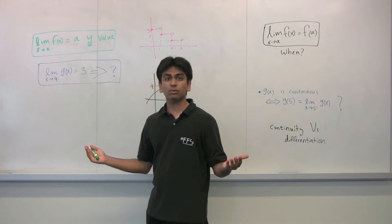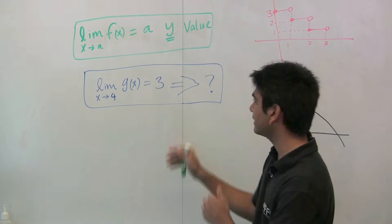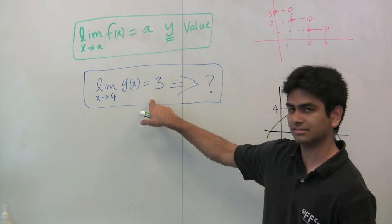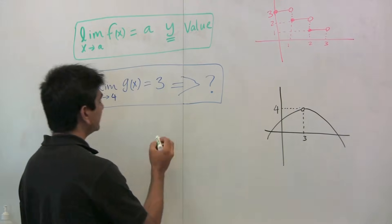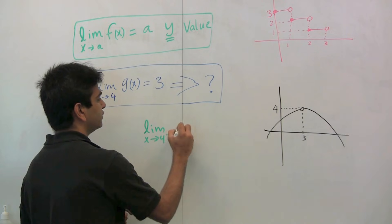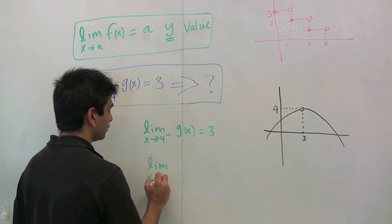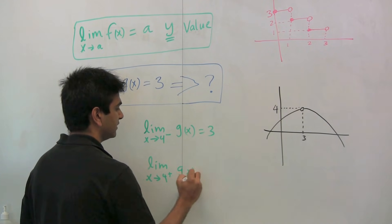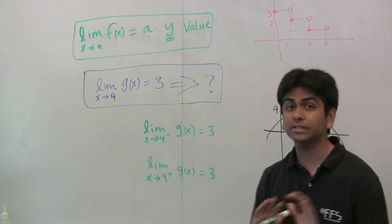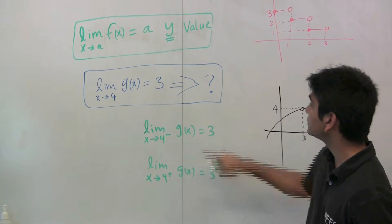So what exactly does it mean when we're given, for example, that the limit as x approaches 4 of g of x is equal to 3? Well, there are only two things we can conclude from this: the limit as x approaches 4 from the left of g of x equals 3, and the limit as x approaches 4 from the right of g of x equals 3. Whenever a limit exists, the only thing we know is that the left and right limits both exist and equal what the limit does.